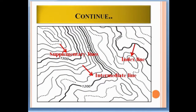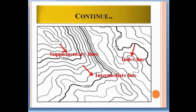Looking at this map, you can see three types of lines. The thickest lines are the index contour lines — they are labeled with numbers: 1100, 1200, and 1300. Between two index contours there are other lines, which are known as intermediate lines.